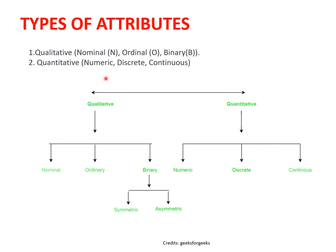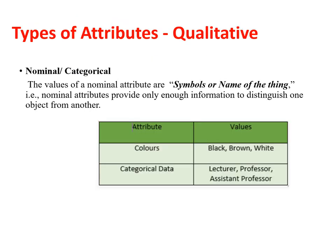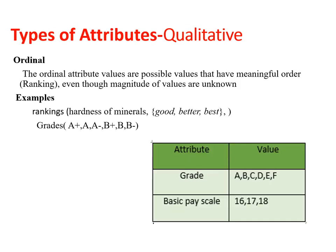The major divisions are: qualitative (nominal, ordinal, binary) and quantitative (numeric, discrete, continuous). Nominal or categorical attributes include colors or academic titles like lecturer, professor, associate professor. Ordinal values are things like mineral hardness (good, better, best), student grades (A, A+), or pay scales.